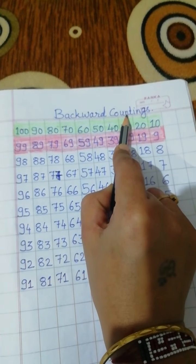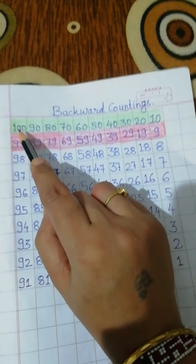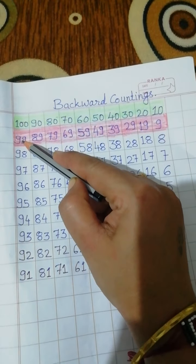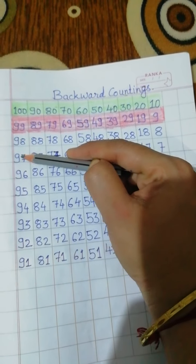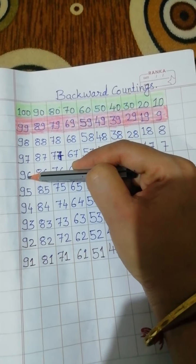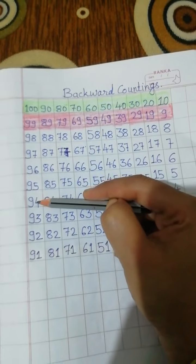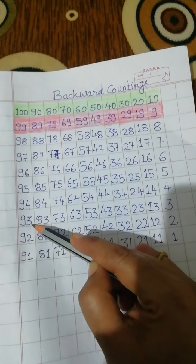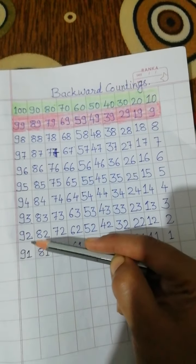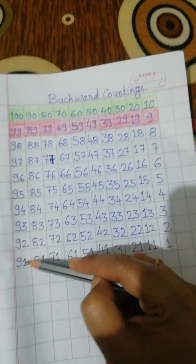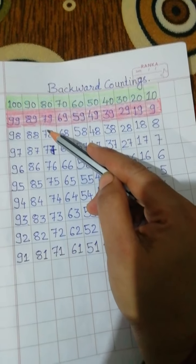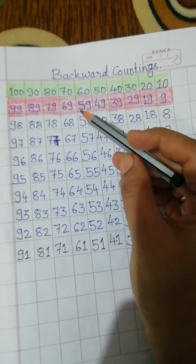Backward counting मतलब 100 के बाद पहले 99 आता है, 99 के पहले 98, 97, 96, 95, 94, 93, 92, 91. ये हमने senior KG में पढ़ा था है. It's very easy. Let's revise again.